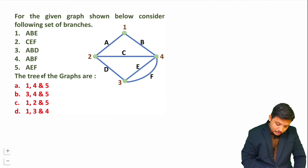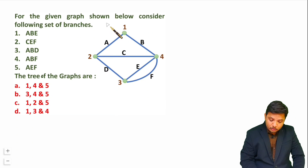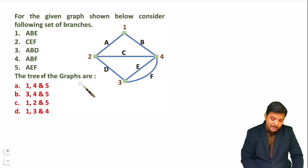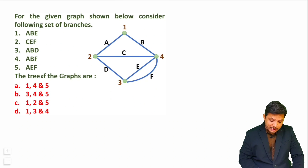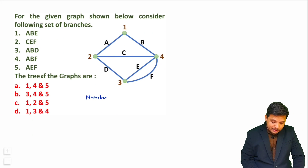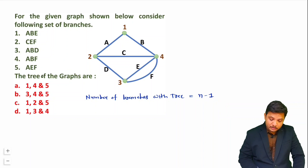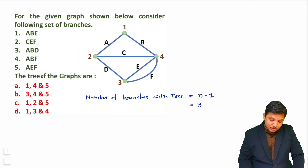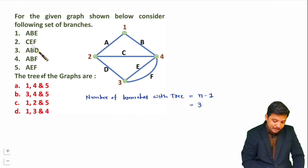Let us look at the second example. For the given graph, we are asked to consider the following sets of branches — A,B,E; C,E,F; A,B,D; A,B,F; and A,E,F — and identify which are trees of the graph. First, the number of branches in a tree equals n minus 1. There are 4 nodes, so a tree must have 3 branches. All five options have 3 branches, so any could be a candidate.